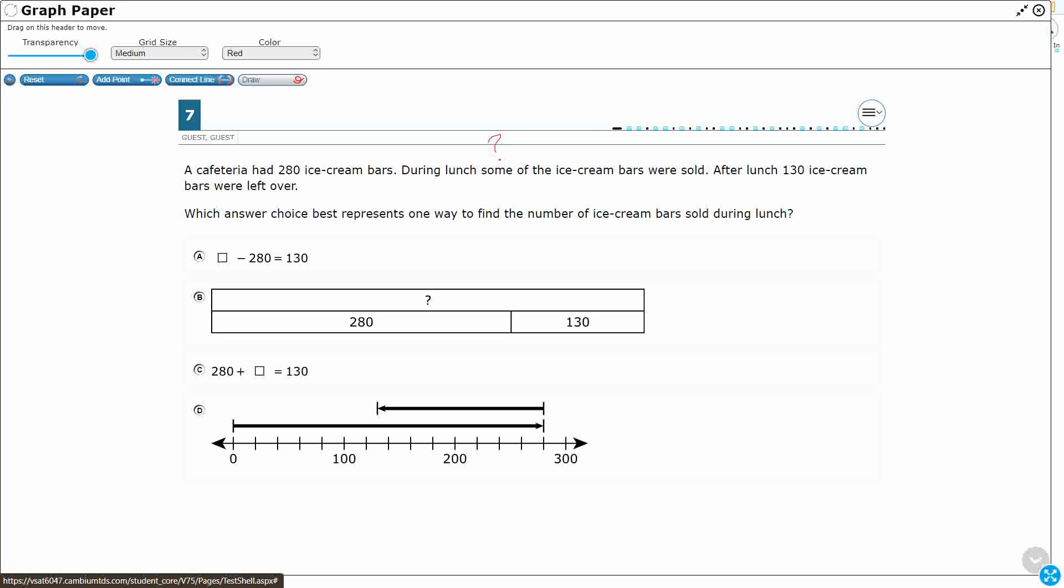We had 280. That looks like a total to me. So I'm going to draw a strip diagram. I'm going to put 280 here, and then it's really going to just come into two parts. Some were sold, that's my question mark, and then I've got 130 left over. So 130 plus however many were sold are going to equal my 280.